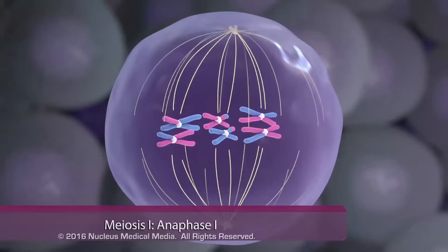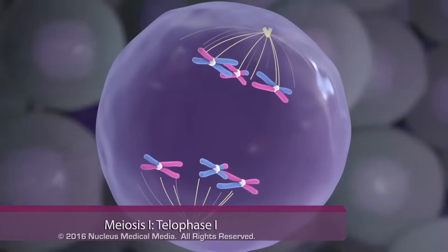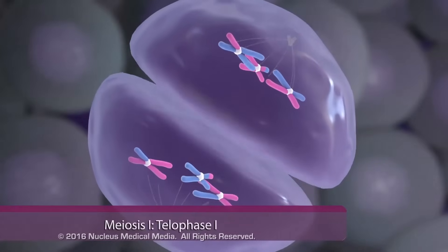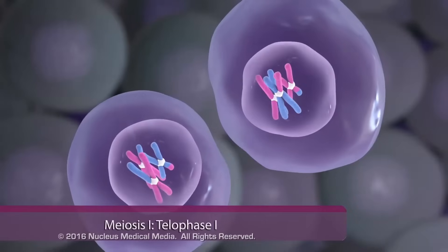In anaphase I, each pair of chromosomes separates, and in telophase I, the cell divides, resulting in two haploid daughter cells.